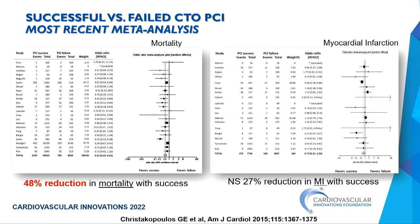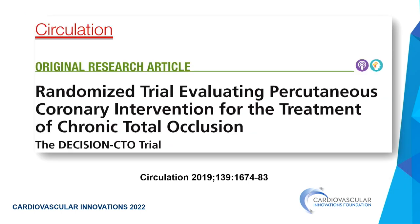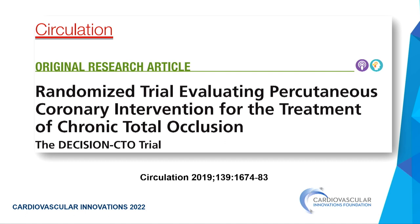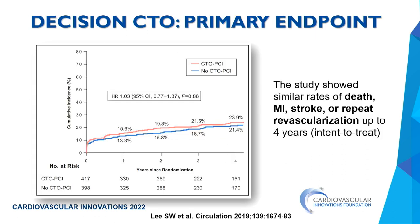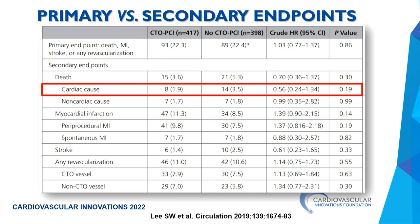The DECISION-CTO trial randomized patients to CTO PCI or not. The primary composite endpoint included death, MI, stroke, and any revascularization, which dilutes the real important endpoints. They randomized two-thirds of their target sample with high crossover and found no difference. However, looking at cardiac mortality: 1.9 percent versus 3.4 percent — a 44 percent reduction in mortality, exactly consistent with what observational meta-analyses show. Periprocedural MI is what drives more events with CTO PCI, while stroke was numerically lower.